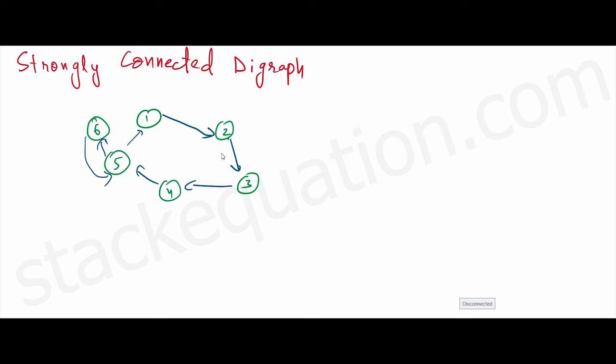Hey, what's up everybody. In this video we'll discuss what is a strongly connected digraph. This is a graph where you have edges, but these are directed edges. That means 1 to 2 is not the same as 2 to 1.